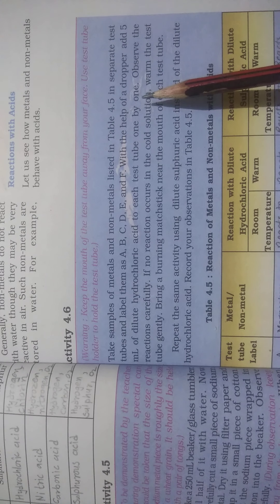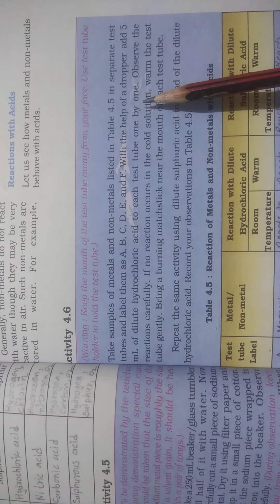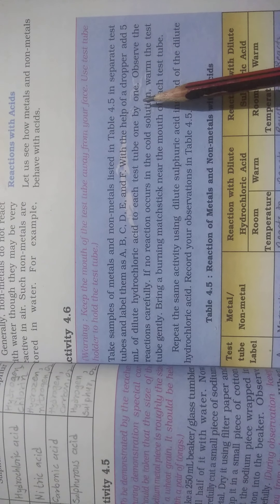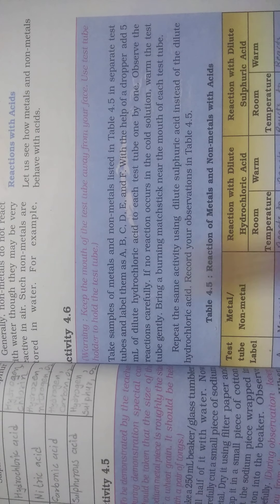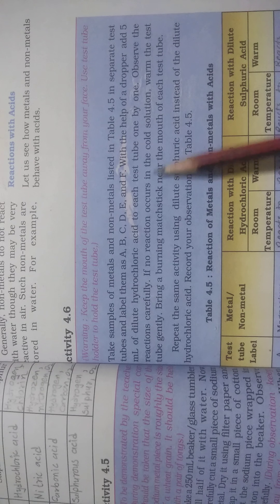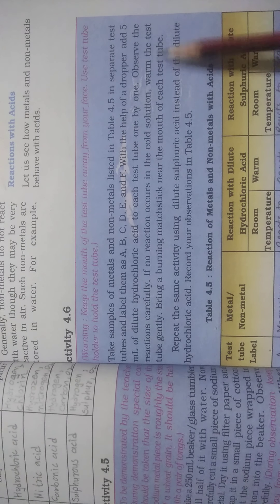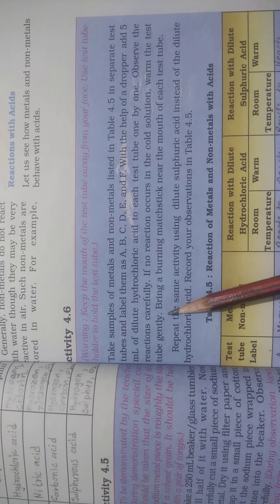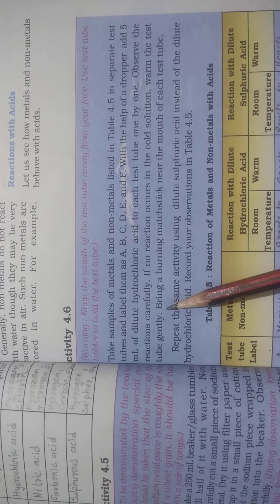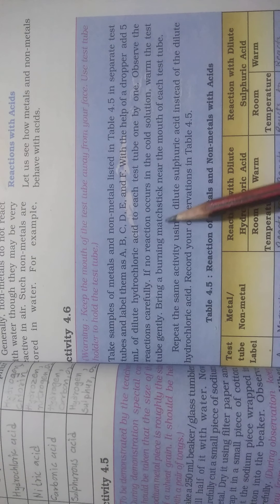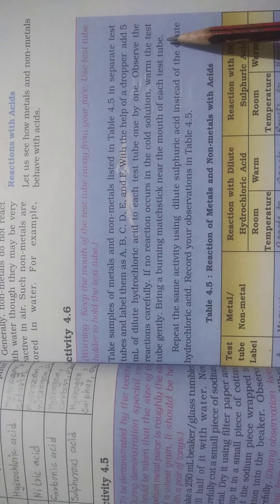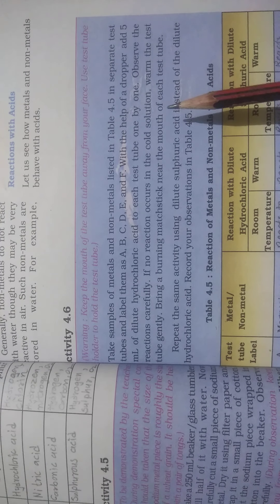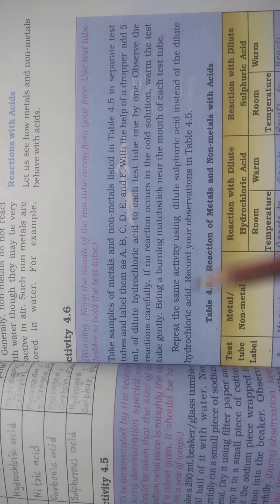Whatever metals were taken, add 5 ml of hydrochloric acid drop by drop into each and every test tube. Observe the reaction carefully. If no reaction occurs in the cold solution, warm the test tube gently. Then bring a burning matchstick near the mouth of each test tube, keeping your face away.